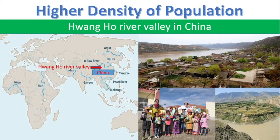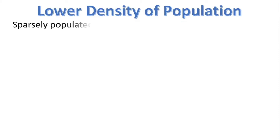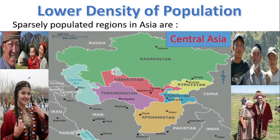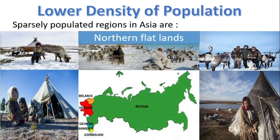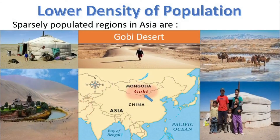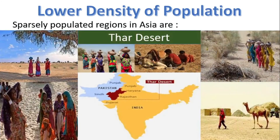These are significant examples for river valleys with a higher density of population in Asia. Some areas in Asia can also be noted with a lower density of population. Sparsely populated regions in Asia include Central Asia, Mongolia, the Northern Flatlands, the Gobi Desert, and the Thar Desert.